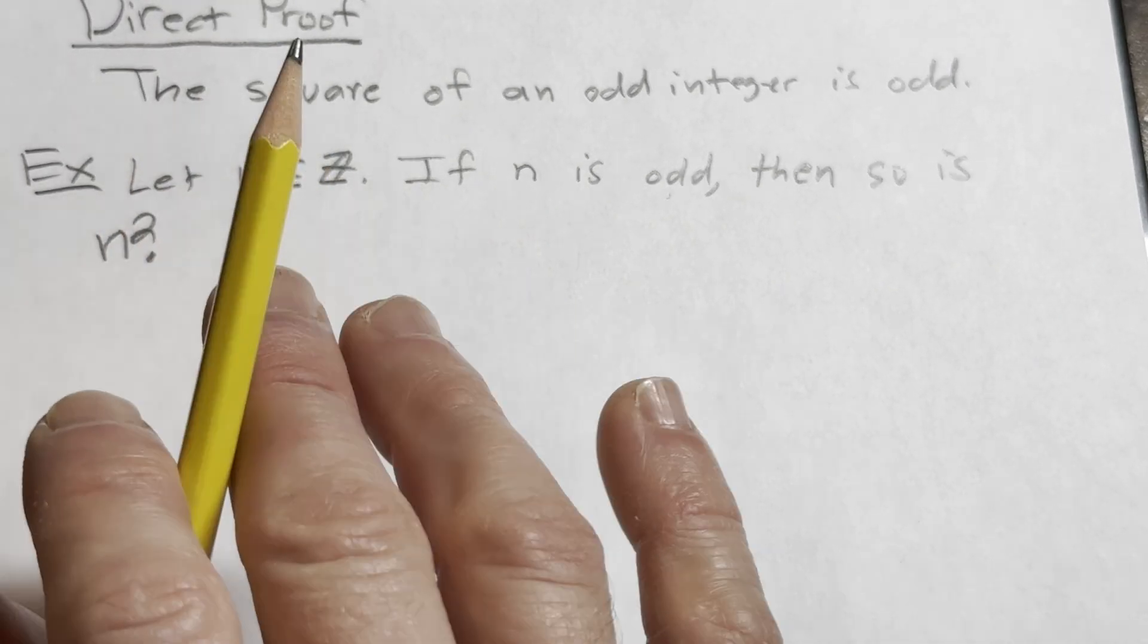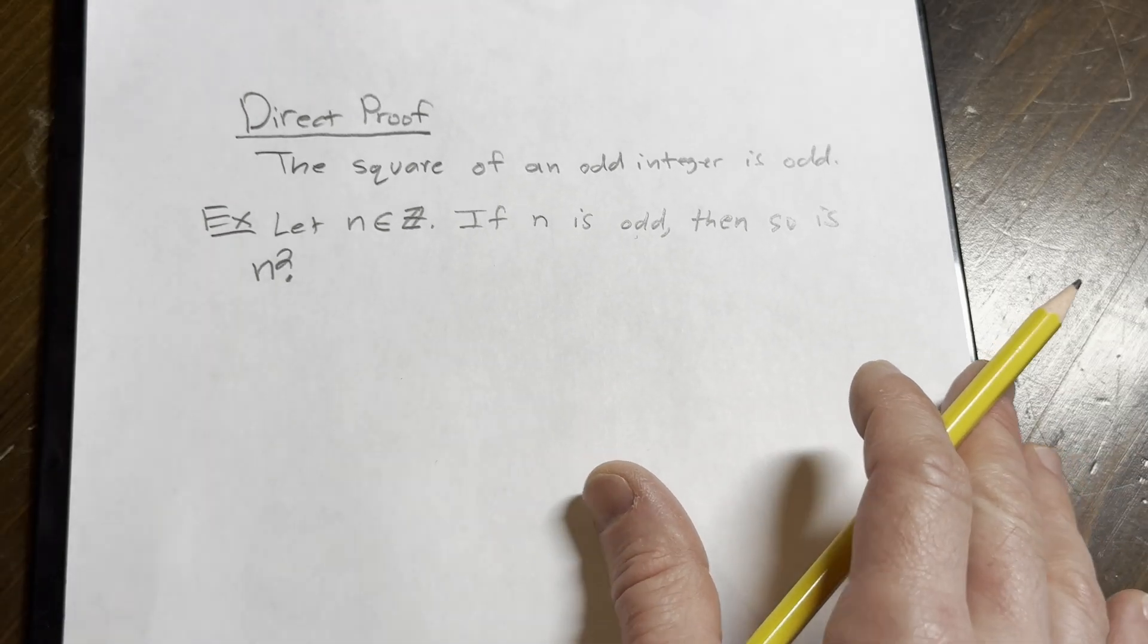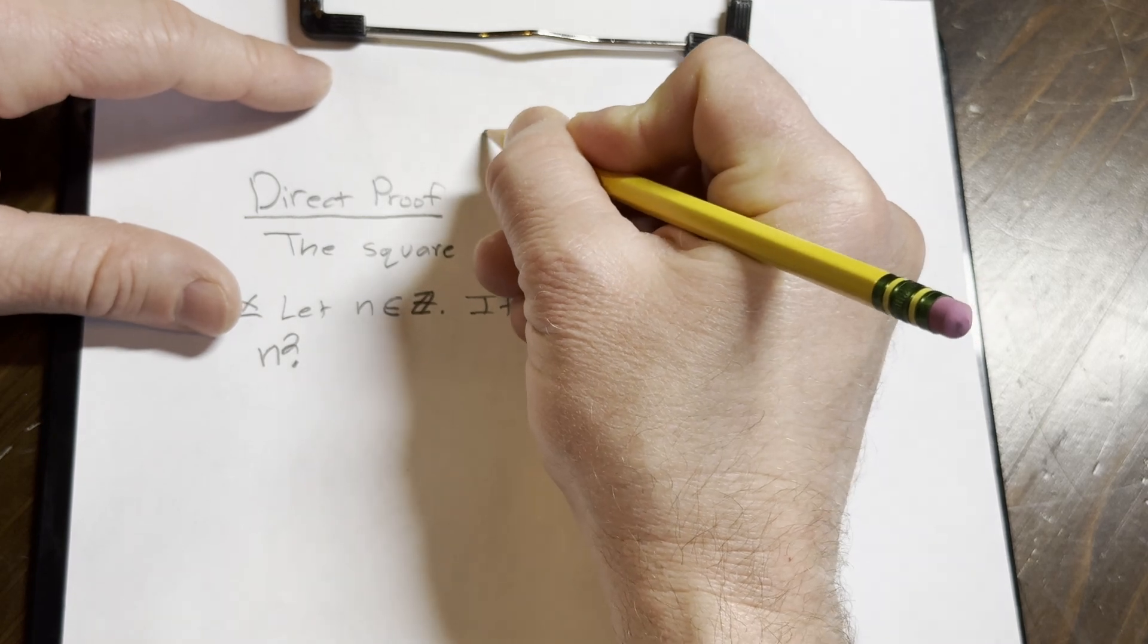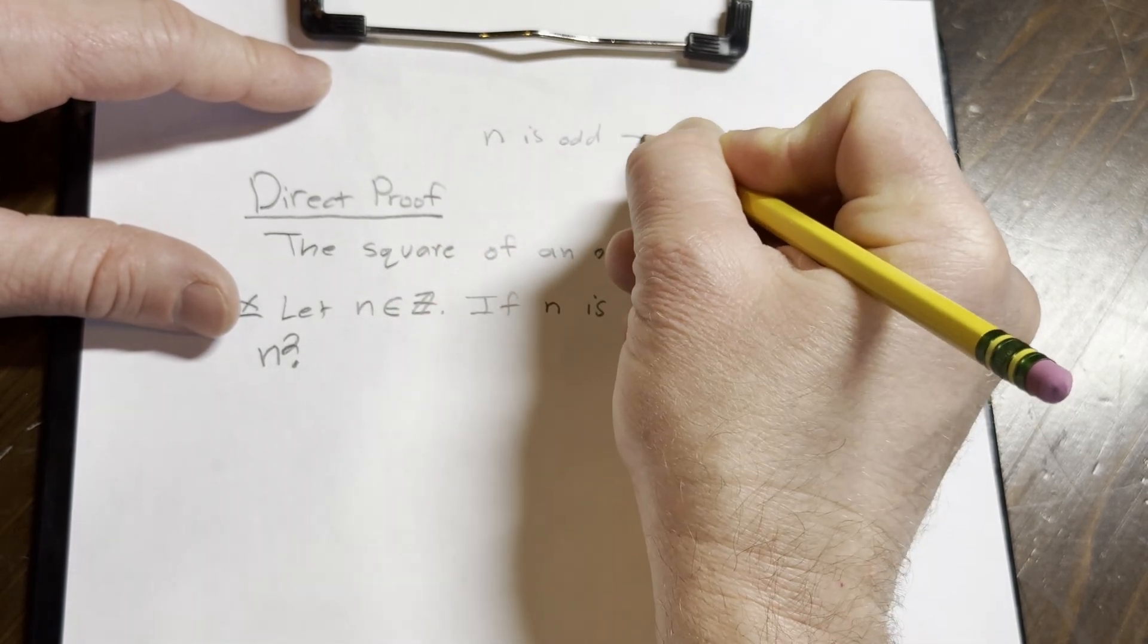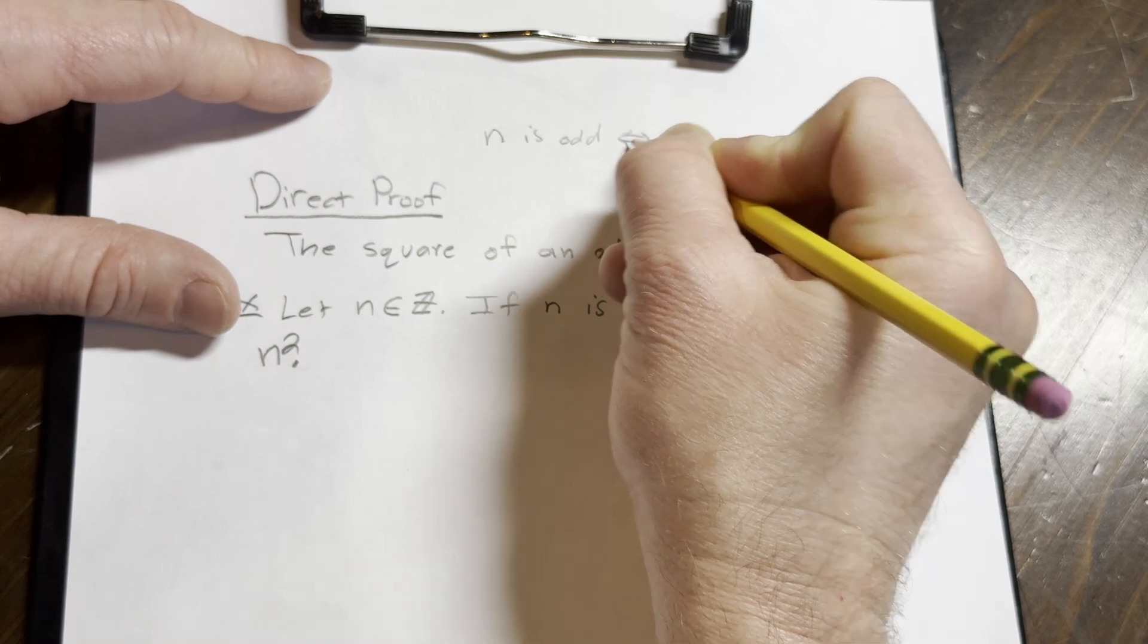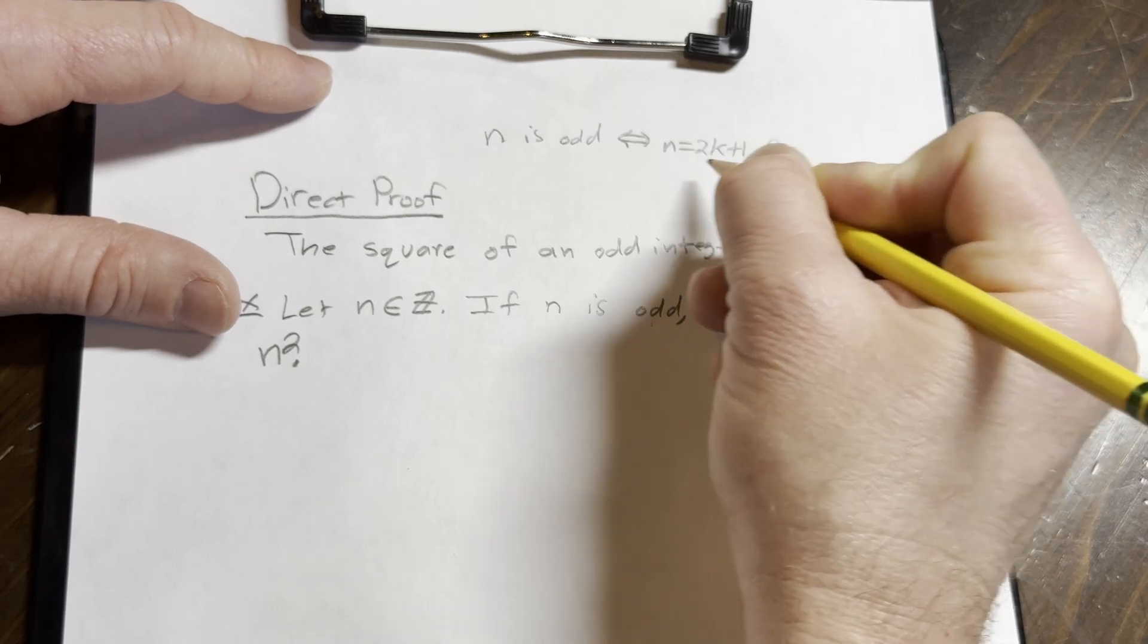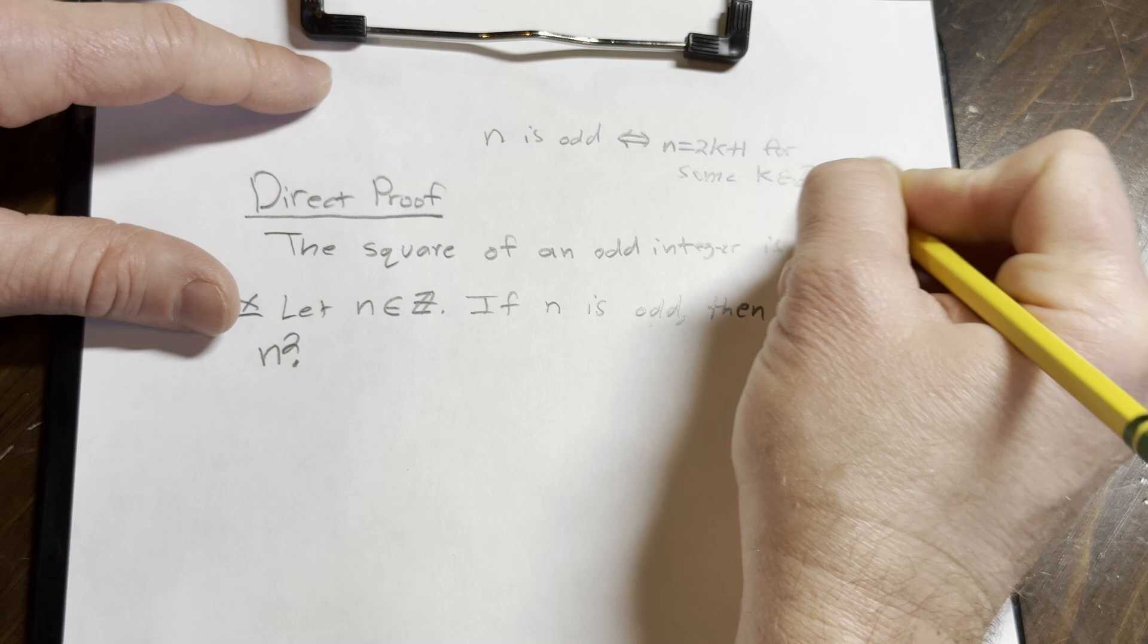All right, so to prove it, you have to know what it means for an integer to be odd. So an integer is odd. I'll write it up here. So n is odd. This is the same thing. This is equivalent to saying n is equal to 2k plus 1 for some integer k in Z.